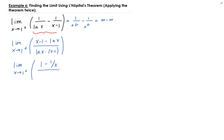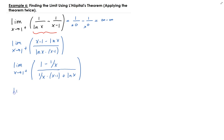For the denominator, we need to use the product rule. We take the derivative of ln(x), which is 1 over x, times (x minus 1), plus the derivative of (x minus 1), which is 1, times ln(x). We can then clear out the fractions by multiplying the numerator and denominator by x.